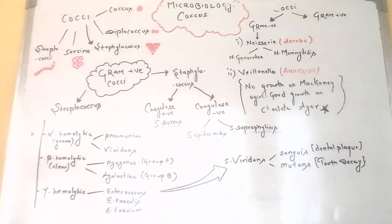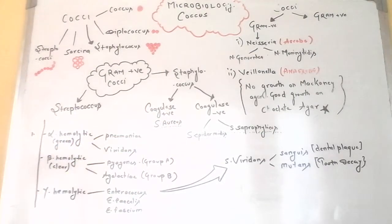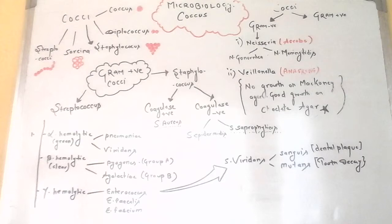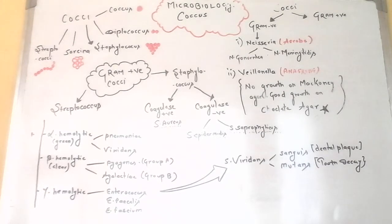Alpha hemolytic includes Streptococcus pneumoniae, and beta hemolytic includes several groups including group A and group B streptococcal. Group A streptococci are often found on the surface of the skin or inside the throat as normal flora, and are a common cause of infection in adults and children. They can spread through droplets in coughs, sputum, or sneezes, or through direct contact with an infected person or contaminated object.